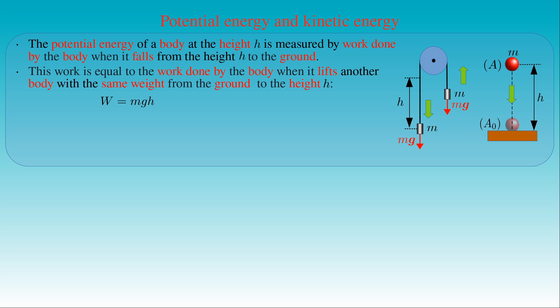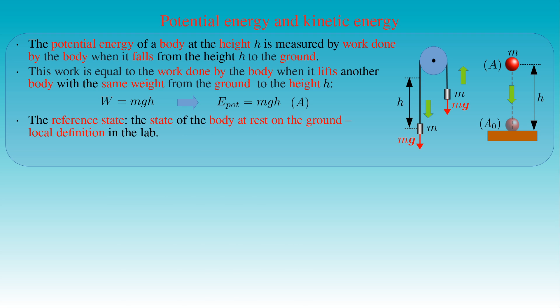The potential energy of a body of mass M at the height H above ground is equal to M times G times H. Since the reference state used to define the potential energy of the body is the state of the body at rest on the ground, the height H is measured from the local surface level of Earth. As a result, this choice provides a local definition of potential energy with respect to the surface level of the ground in the lab where the experiment measuring the potential energy is performed.